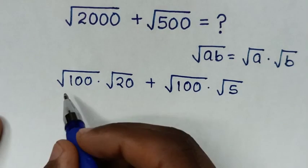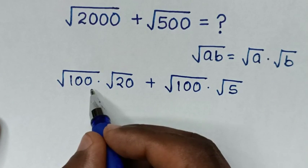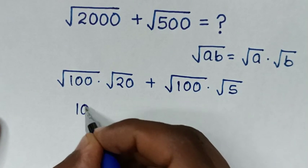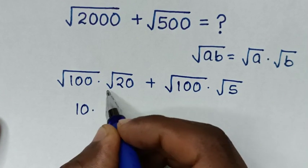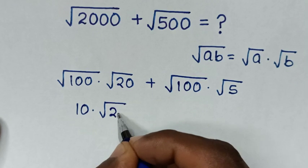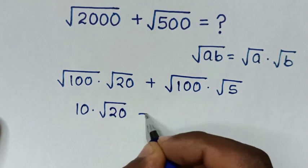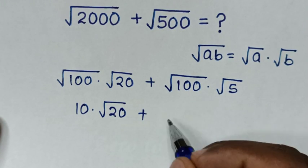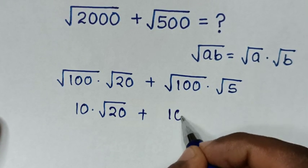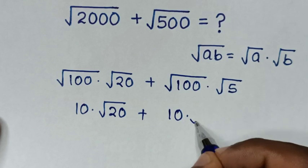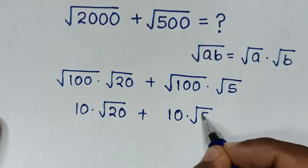In the next step, square root of 100 is 10, times square root of 20. Then, plus square root of 100 is 10, times square root of 5.